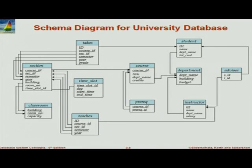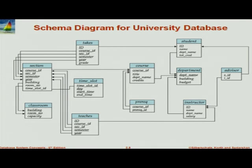So a section ID does not have to be unique across time, but it should be unique in a particular semester — section A, B, C in this year and this semester. One alternative we considered was to have a section ID as the single primary key, with course ID, semester, and year as foreign keys referencing other tables. We picked this particular design for simplicity. The section is associated with the course, so course ID is not only a primary key attribute but also a foreign key referencing course.